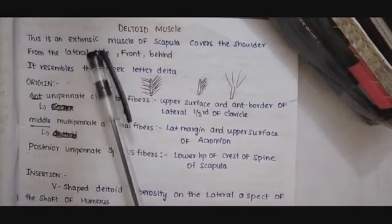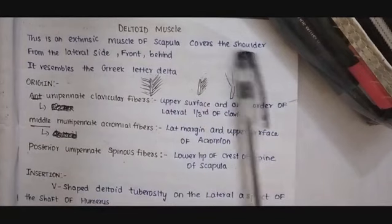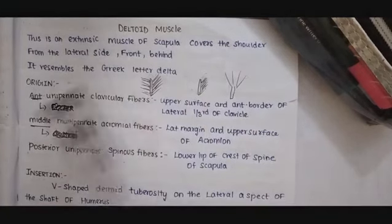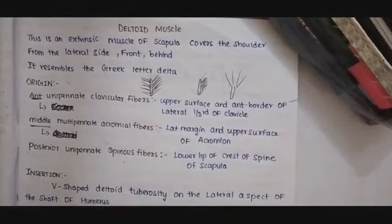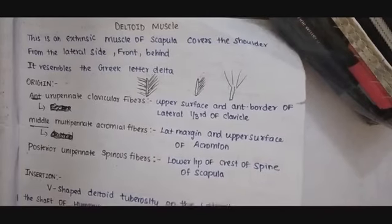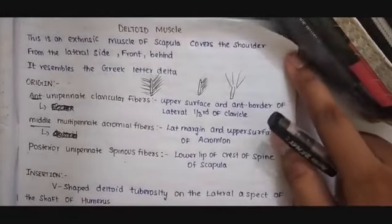This is an extrinsic muscle of scapula. It covers the shoulder from the lateral side, from the front as well as from behind. Extrinsic muscles are the muscles which are superficially located. This deltoid muscle resembles the Greek letter delta, hence the name deltoid muscle.